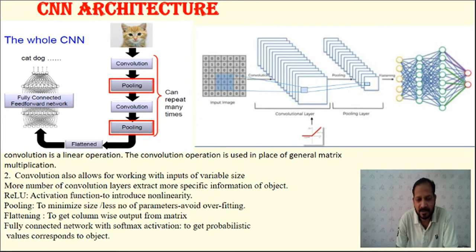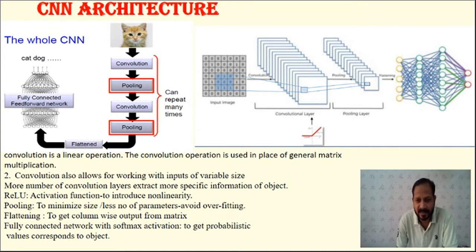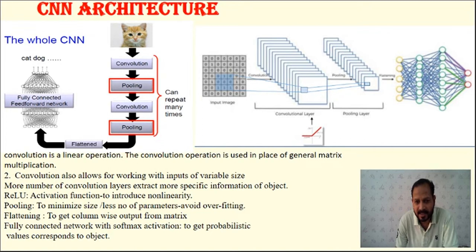Similar to how you first see a table as a whole, then identify what's on it, and then read what's written on a book on the table — by repeating the convolution and pooling layers, the image size keeps reducing. We see the image more critically, getting more important information. How many times to repeat depends on how much critical information is required.